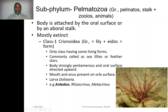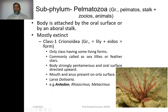The body is attached either by the oral surface or by an aboral stalk to the substratum. It looks like a plant having a stalk through which it is attached. As they are mostly extinct, only one class, Crinoidia, is a living class.